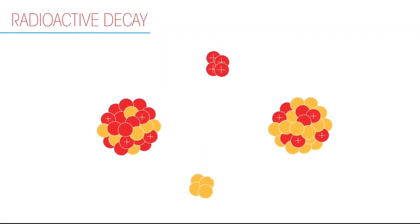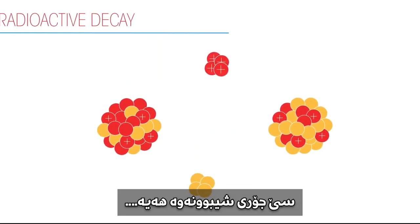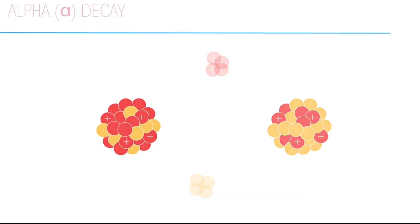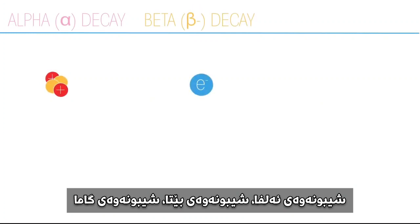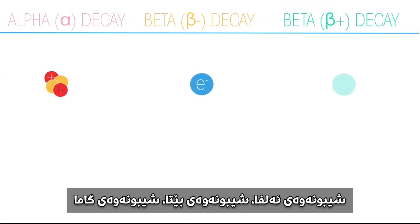There are three types of decay: alpha decay, beta minus decay, and beta plus decay.